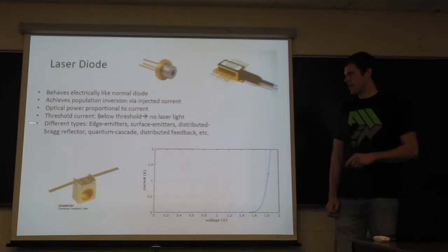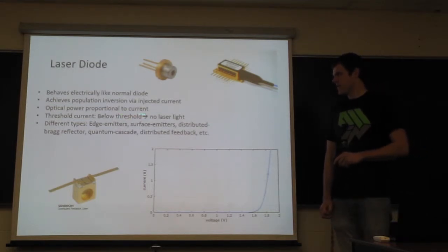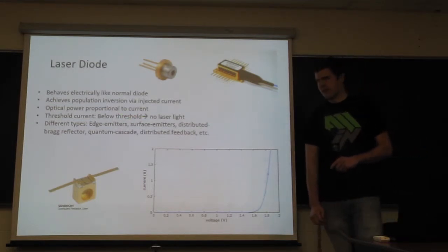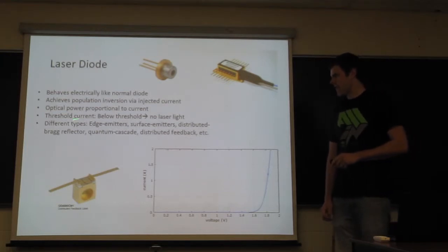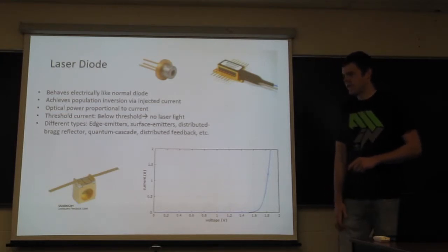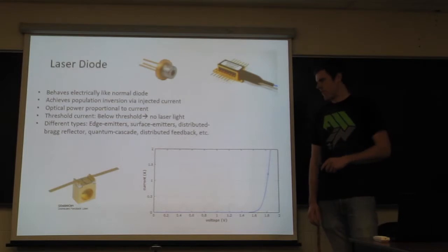And there is a threshold current above which, below which, you'll get no laser light. And there are a number of different types of semiconductor diode lasers. There are edge emitters, surface emitters, distributed Bragg reflectors, and so on.